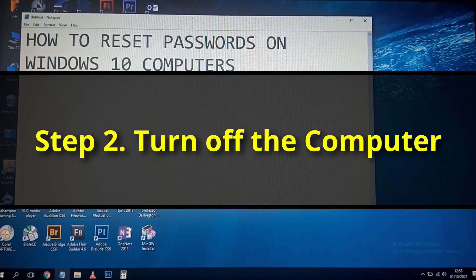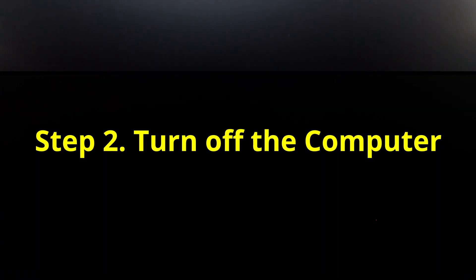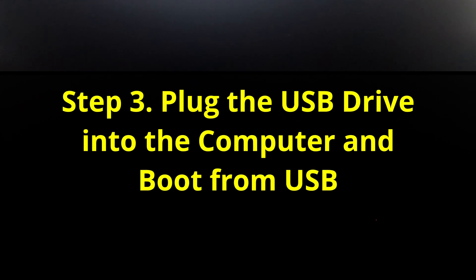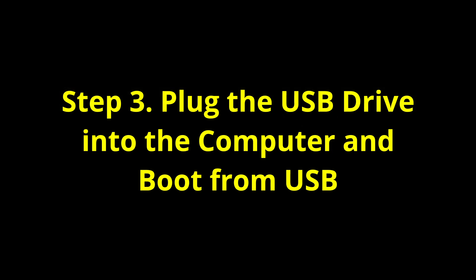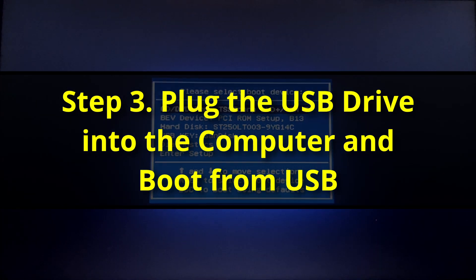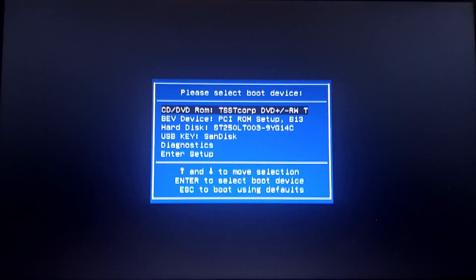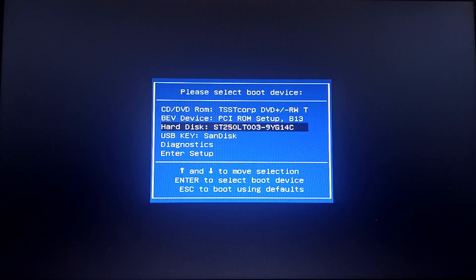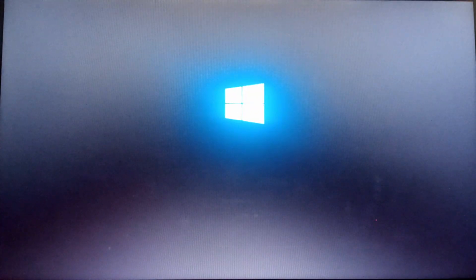Step two is to make sure the machine is off completely. Once the machine is off, connect the USB drive as though you want to run a new Windows 10 installation. Then turn on the computer and make sure you boot from the USB. To boot from the USB, you can press F12 or any key that will show the boot options. Select USB from the boot menu and hit enter, and Windows 10 will start as though you are about to do the installation.